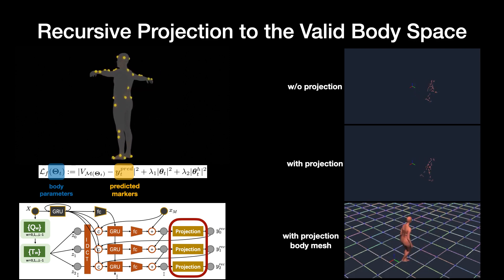On the right, we can see how this recursive projection can effectively eliminate implausible body deformation.